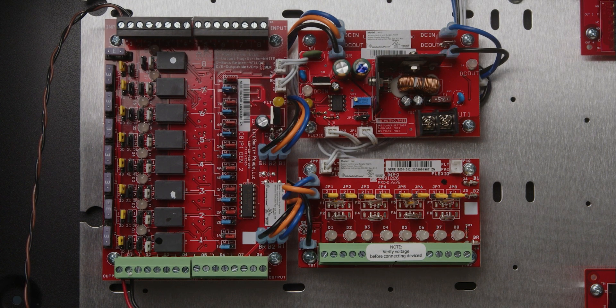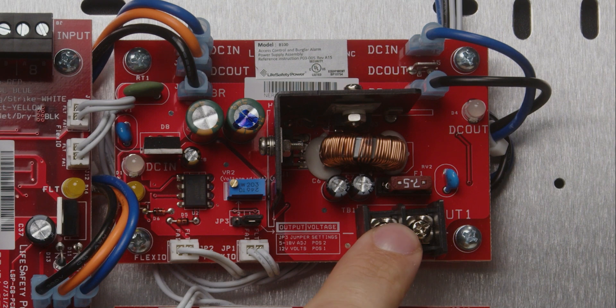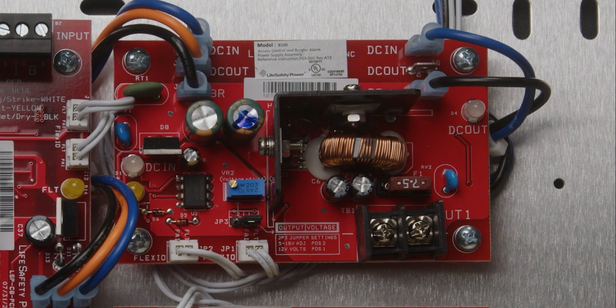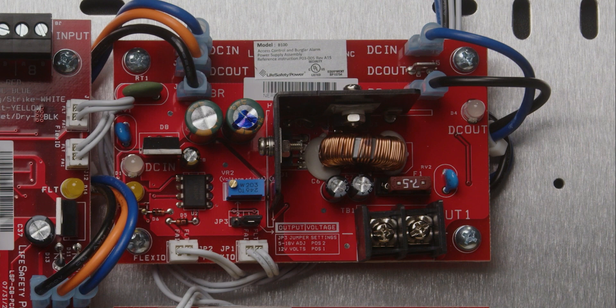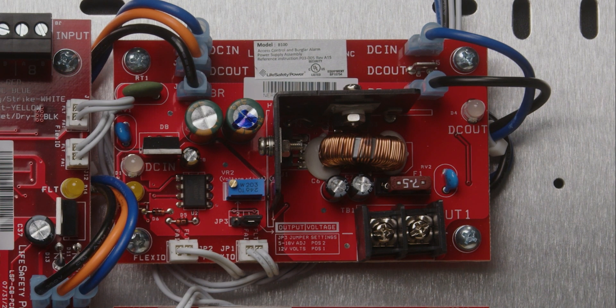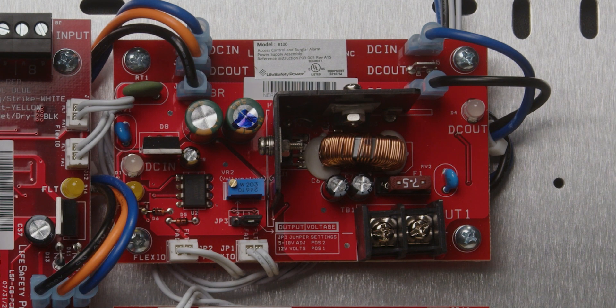Just a quick tech tip. TB1 here is a 12-volt output by default with the jumper on JP3 in position 1. In position 2, it's useful for cases if you encounter an extremely far reader run or specifically a 12-volt lock run.